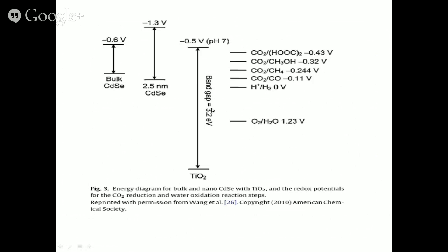Here I have shown the conventional energy band diagram for bulk and nano cadmium selenide. In nano CdSe with a size of 2.5 nanometers, the conduction band minimum shifts to a more negative value compared to bulk CdSe. In bulk CdSe the conduction band minimum is similar to that of TiO2, meaning electron transfer from bulk CdSe to TiO2 may not occur by the conventional route. However, in nano CdSe, the conduction band minimum goes to −1.3 V, enabling that electron transfer.